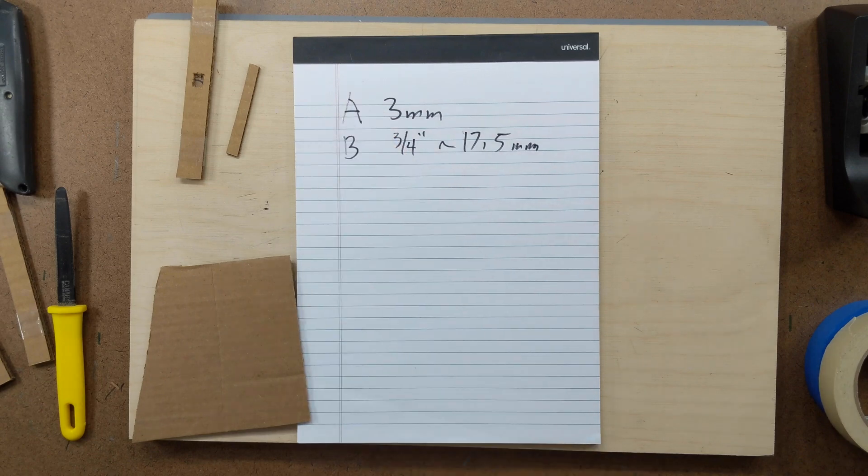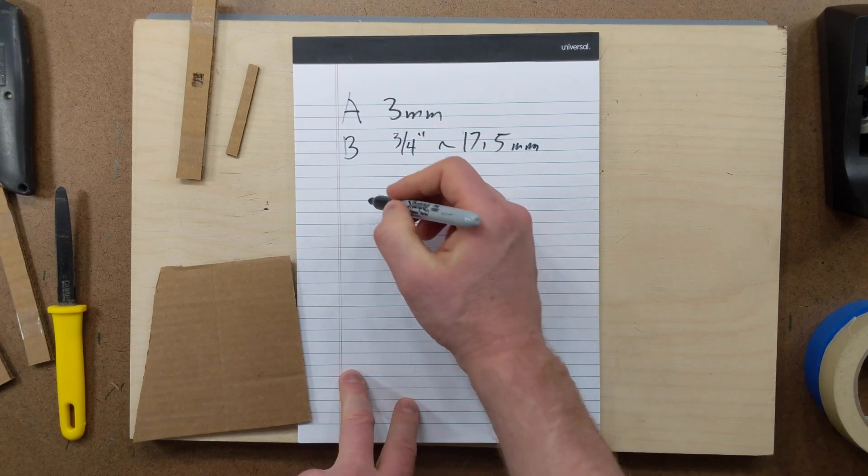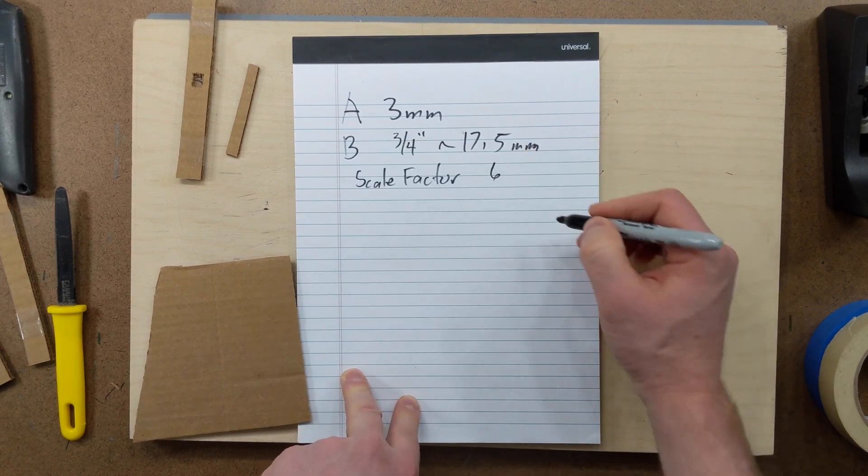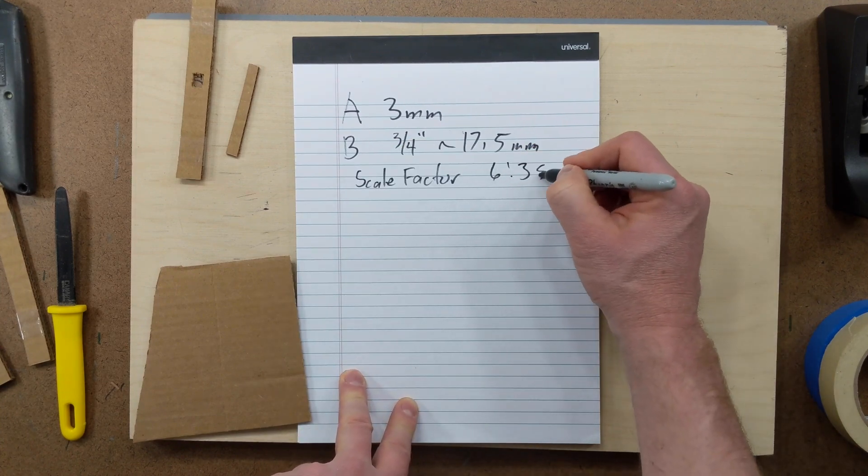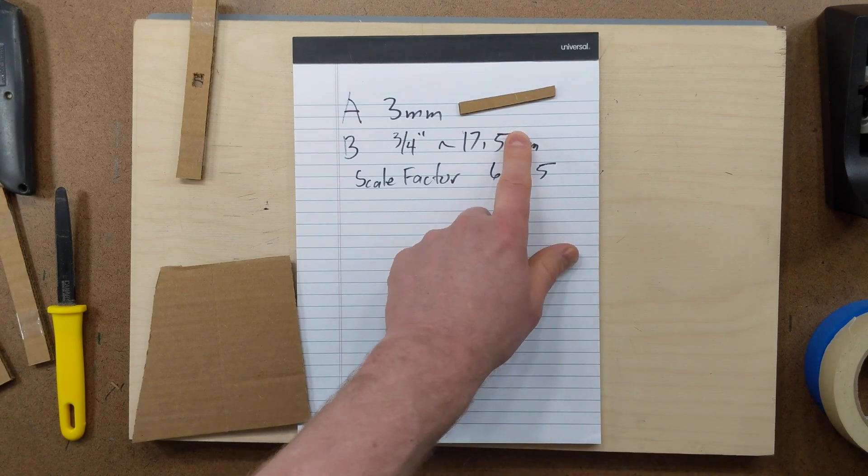So now I have these two lengths, and I can put them into a calculator and get the scale factor. This gives me a scale factor of 6 to 35. Again, this is with a single piece of cardboard.